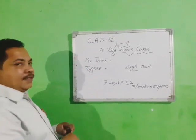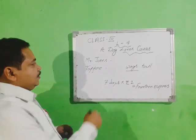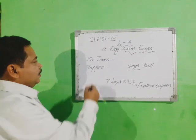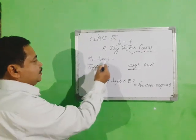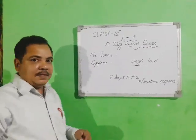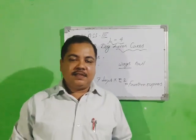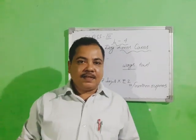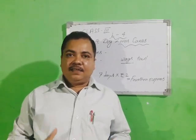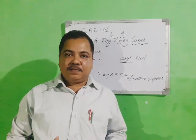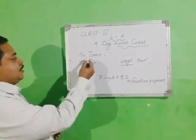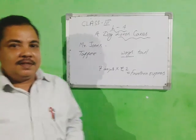In this story there are two main characters: one is Mr. Jones and the other is Toffee. Mr. Jones is a very gentle gentleman, and he is very sensitive to animals. His pet dog's name is Toffee.